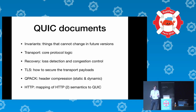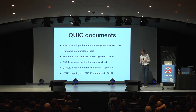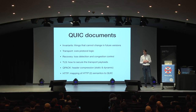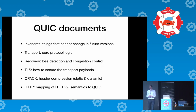QUIC is split up currently into six documents. That makes it easier to get to the parts you find interesting or to do more modular protocol implementations. First is Invariants — they document stuff that cannot change across versions, to help with version negotiation and robustness against future protocol changes. Transport is the core protocol logic with all the stuff about the handshake and how data is transferred. Recovery is all about loss detection and congestion control: if packets get lost, how do you detect it, what do you do, and how do you handle restricted network flow?